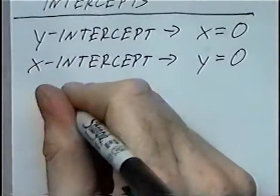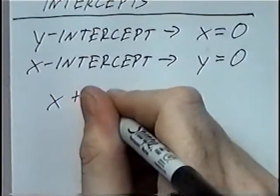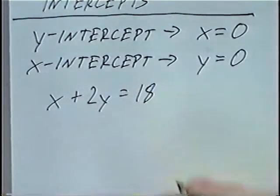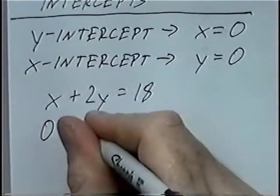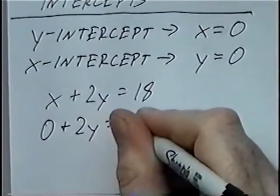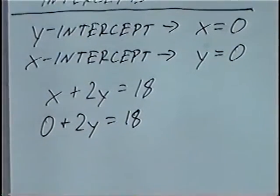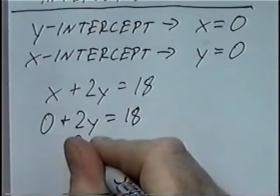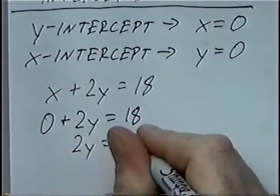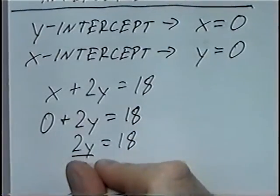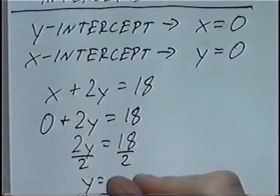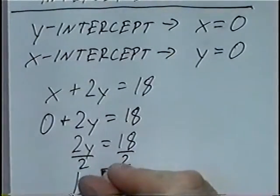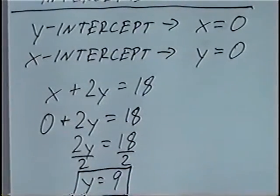The first equation is X plus 2Y equals 18. To find the Y intercept, we can put a 0 for the X value. So 0 plus 2Y equals 18. 0 plus 2Y would be 2Y equals 18. Solving for Y, we can divide by 2. So Y equals 9. The Y intercept, where the graph crosses the Y axis, would be 9.